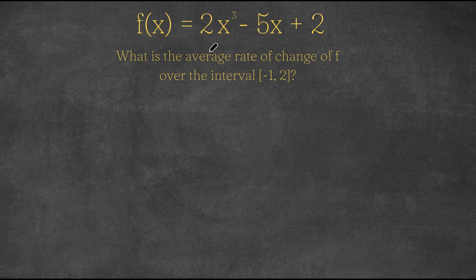So right here we have the function f(x) is equal to 2x to the power of 3 minus 5x plus 2. And we want to find the average rate of change of f over the interval negative 1 comma 2.